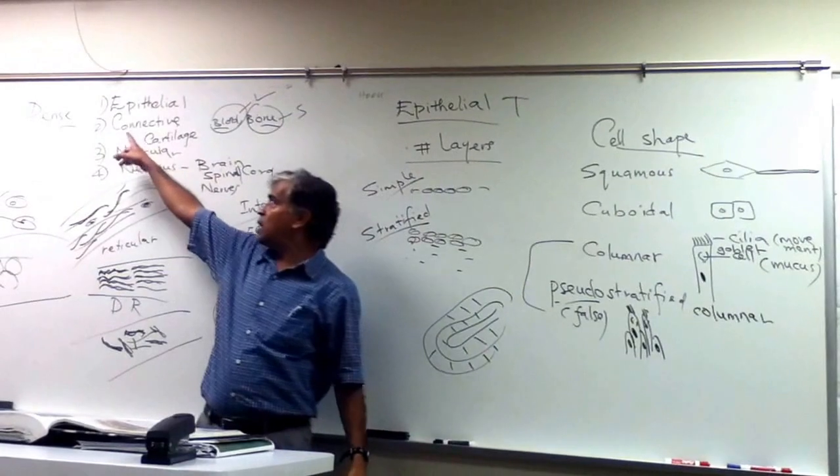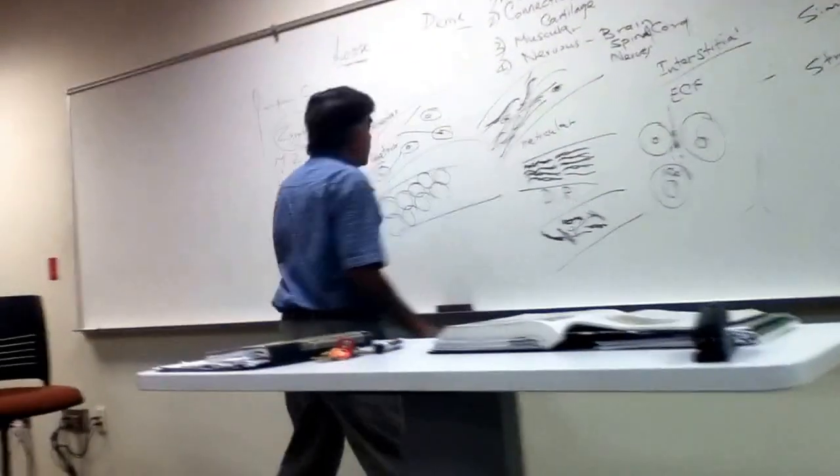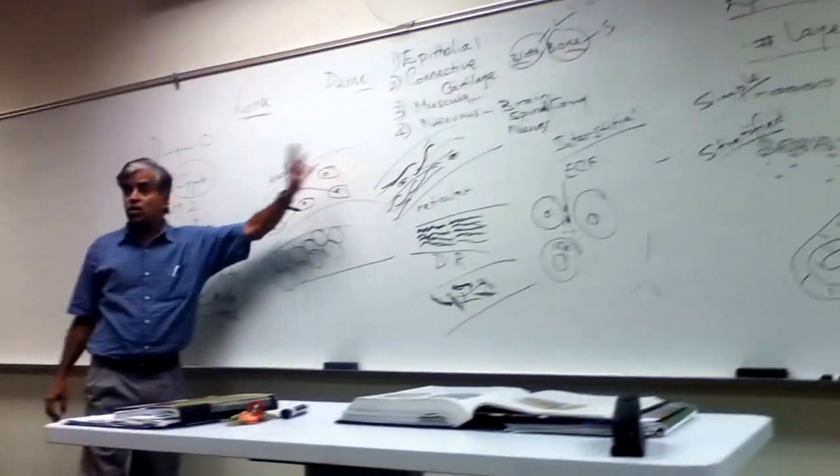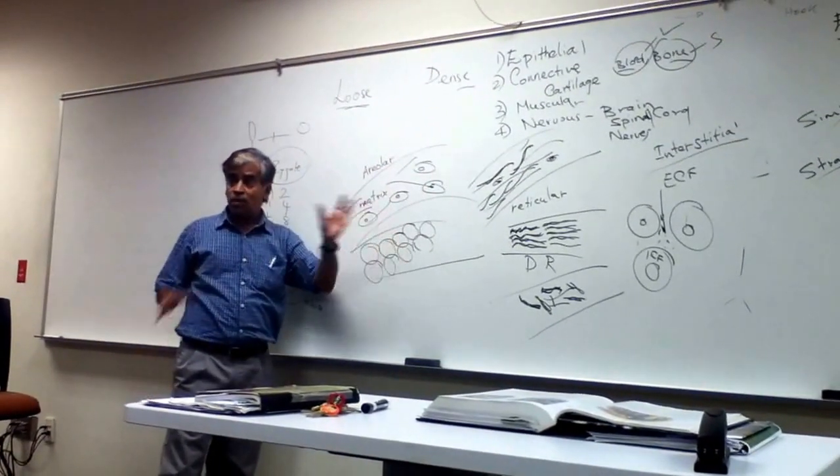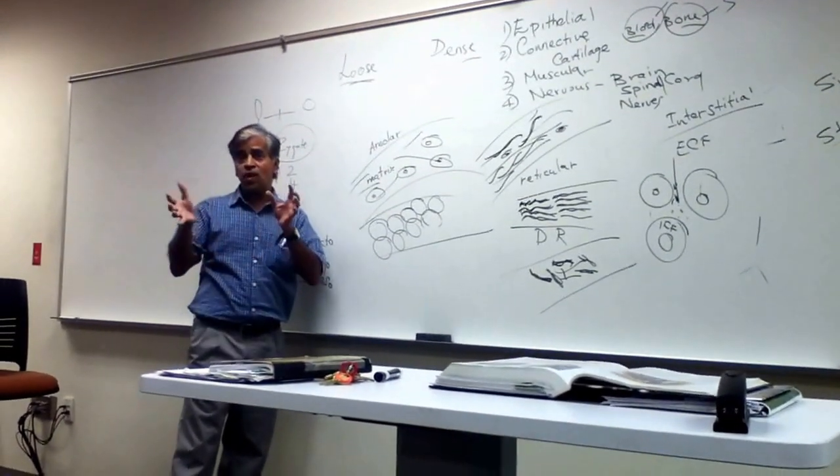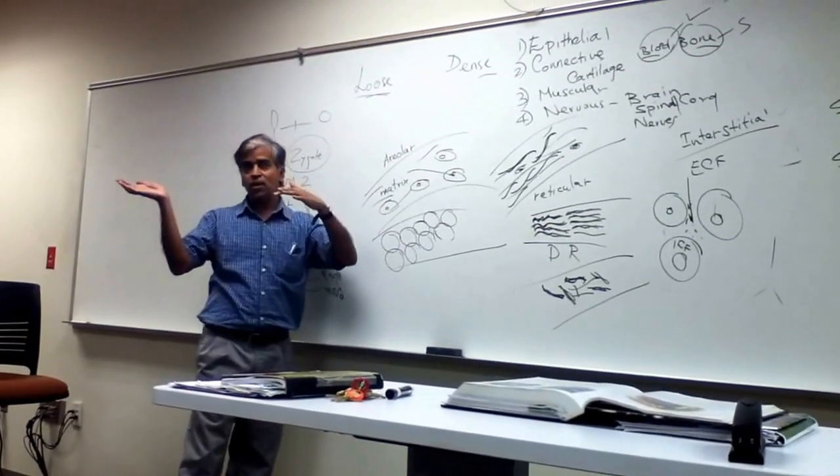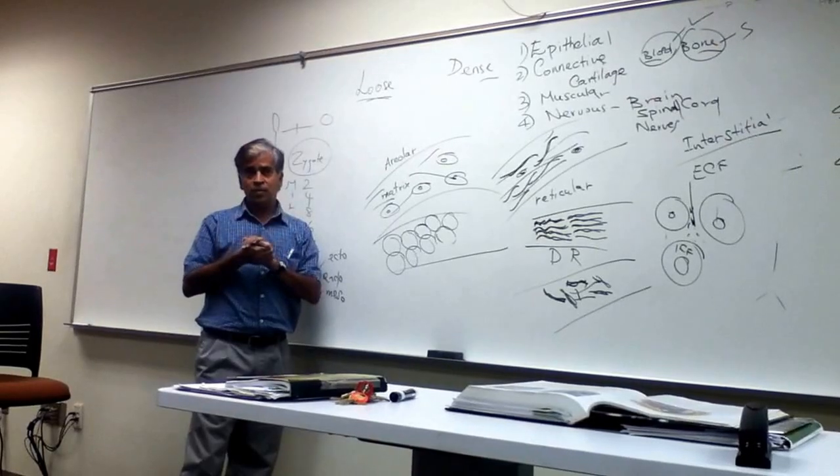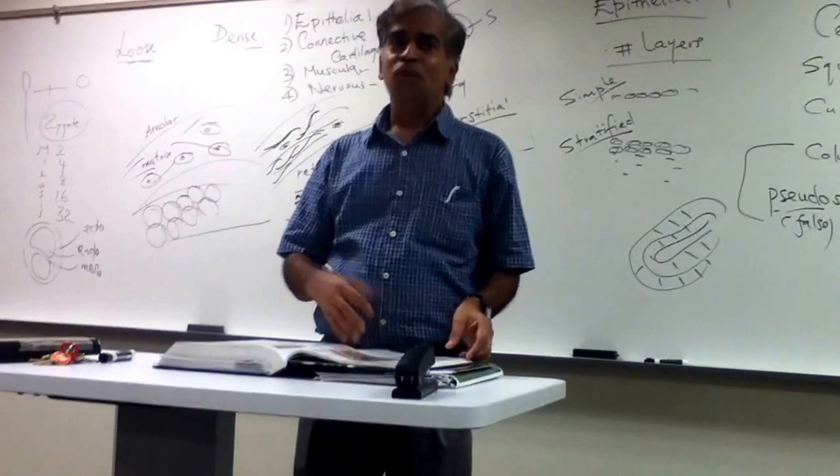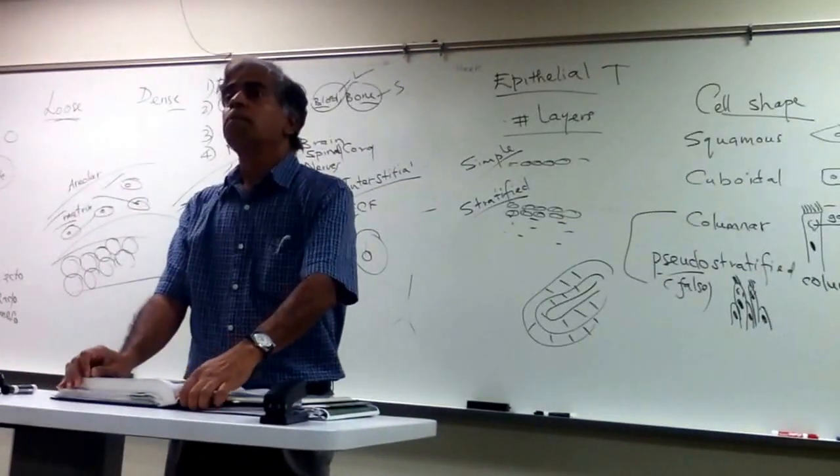And then for the connective tissue, how they are classified into loose and dense? And what are the features they look for? They look for the cells, the matrix, and the fibers. Based on these three, they give names. How they are arranged. Whether you have more matrix, more cells, or less fibers, more fibers. Whether they are densely packed or loosely packed. Regular versus irregular. That's how they get their names. So we have to know the description? Like of it? Whatever I explain to you.